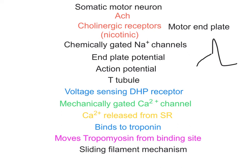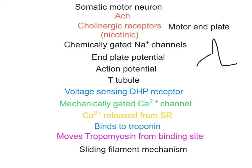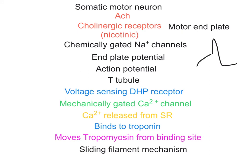The calcium is going to bind to troponin. Troponin will pull tropomyosin away from the binding site — the binding site on the actin to which the myosin head will attach itself once the phosphate is released. That is the whole sliding filament mechanism, which is available on another Explain Everything.